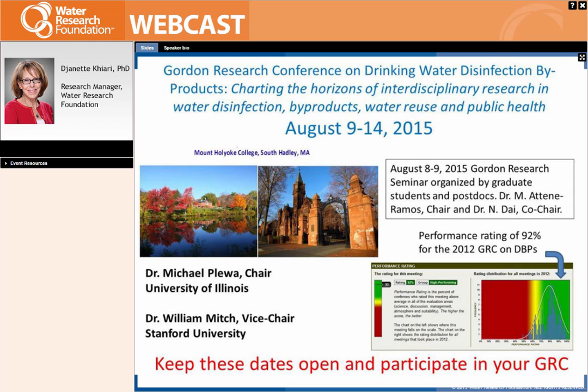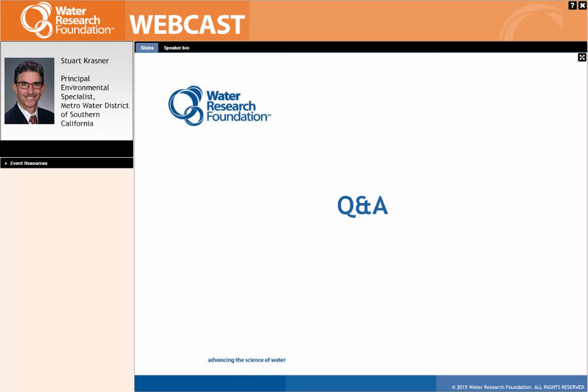First Q&A question: when performing the NDMA formation potential test, are chloramines always used? Stuart Krasner confirms yes — NDMA is preferentially formed by chloramines. A formation potential test with chlorine only on pure wastewater showed little or no NDMA formation. One exception is when a source water already contains ammonia and chlorine is added, forming chloramines in situ. Under normal scenarios, the formation potential test always uses chloramines.